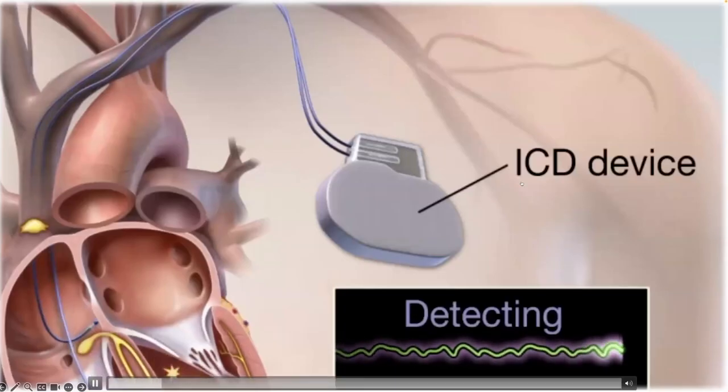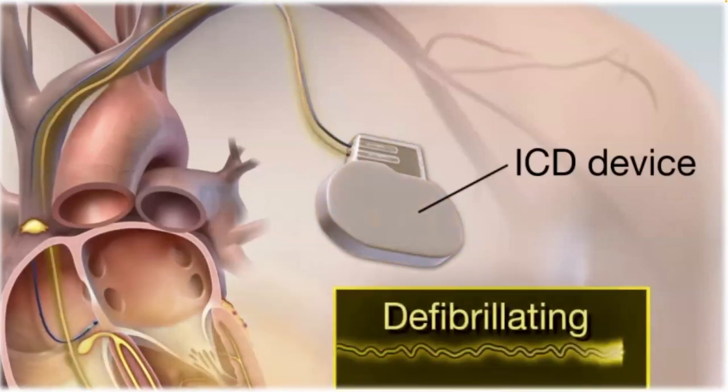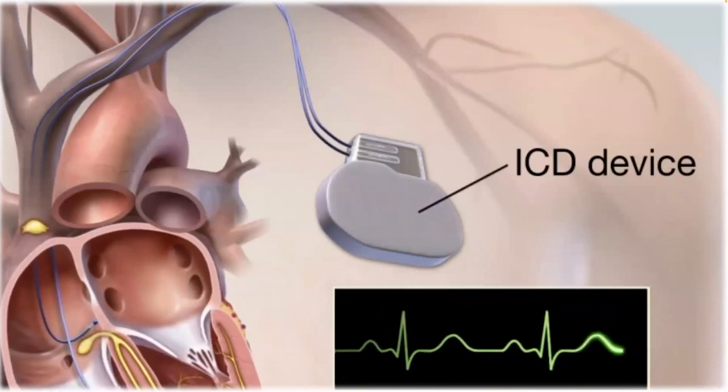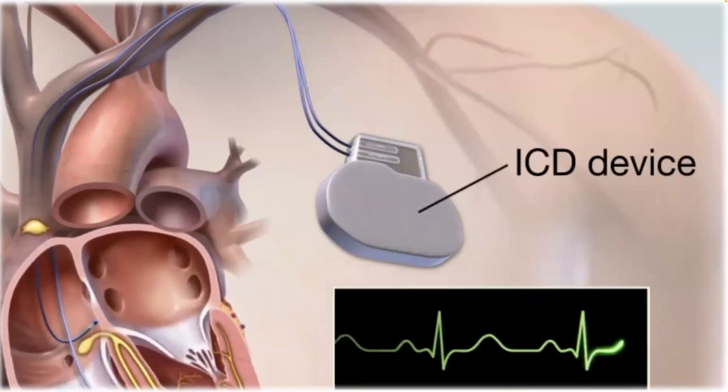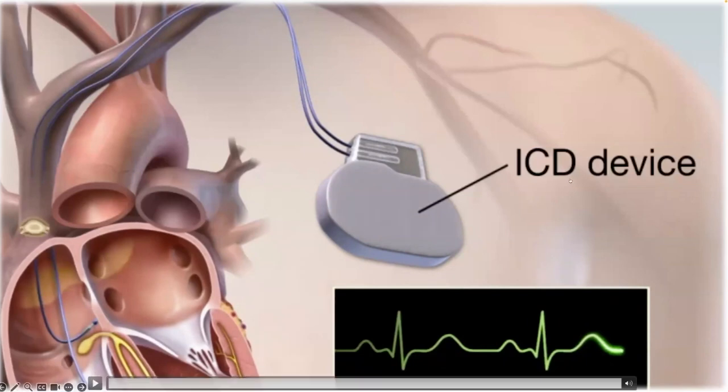As you can see, this is the process of how implantable cardioverter defibrillator devices work, and we call them ICD devices. They keep an eye on our heartbeat using a signal called the electrogram signal. If the ICD notices the heart is beating the wrong way, it will send a shock to get the heart back to its normal rhythm.